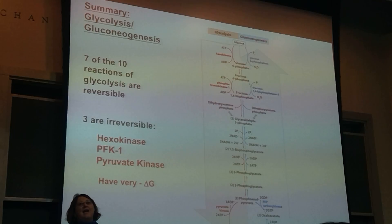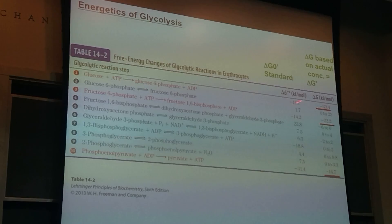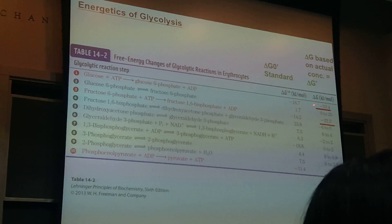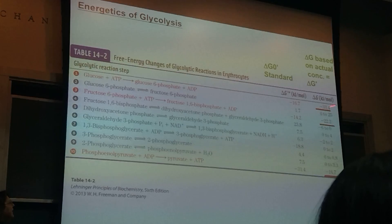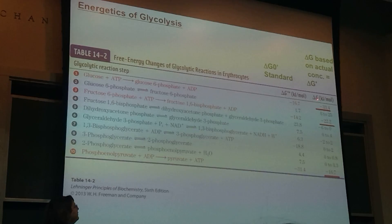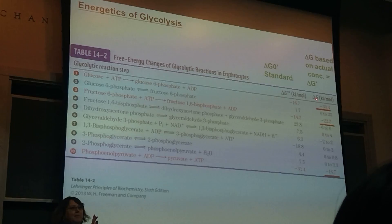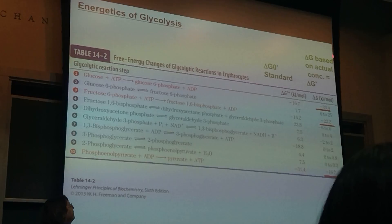Looking at the energetics — from this table in your book — the standard free energy at pH 7, 1 molar, 25 degrees Celsius is highly favorable for these 3 irreversible reactions. The actual free energy with the concentration of reactants and products is also highly favorable — a really nice negative delta G. The others vary; they're pretty close to zero or can be zero depending on conditions, and they're reversible. Sometimes in your textbook it just has delta G, but often I'll have delta G prime — that just means pH 7, 25 degrees Celsius. Make sure it's distinguished from the standard delta G zero.